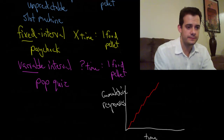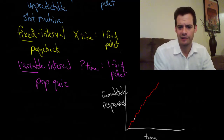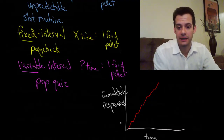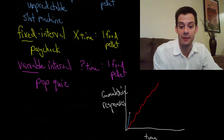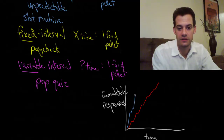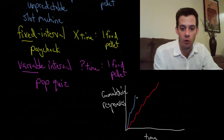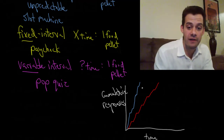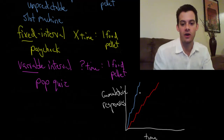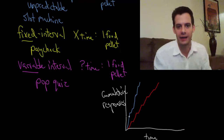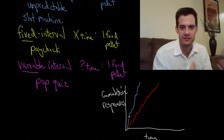In a variable ratio schedule, the animal presses rapidly because it doesn't know which press will deliver the reward and it's always changing. He might press ten times to get a reward, then three times, then fifteen times — so he just sits there pressing rapidly, hoping the next press delivers the reward. This is similar to what you see at a slot machine — you never see someone slowly playing a vending machine, but at a slot machine people press rapidly because the next one could be the reward.